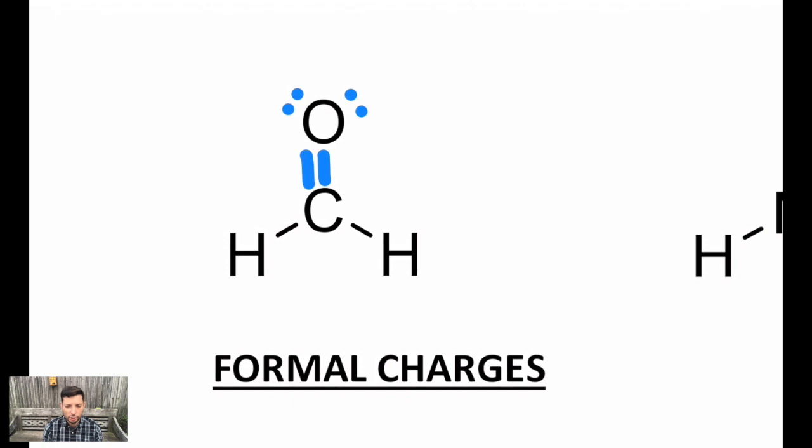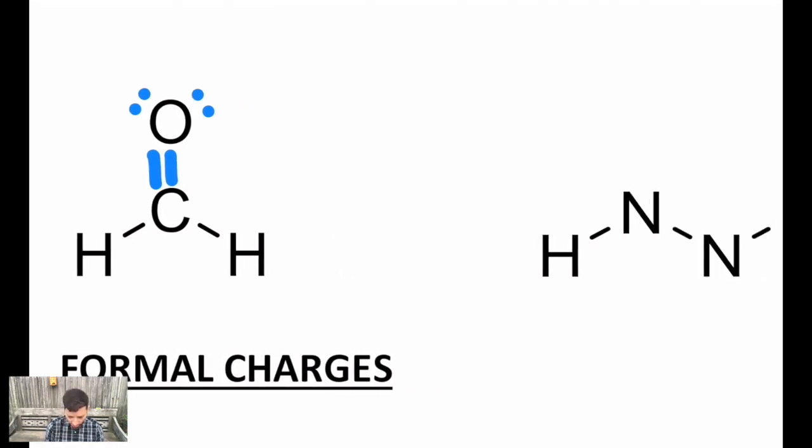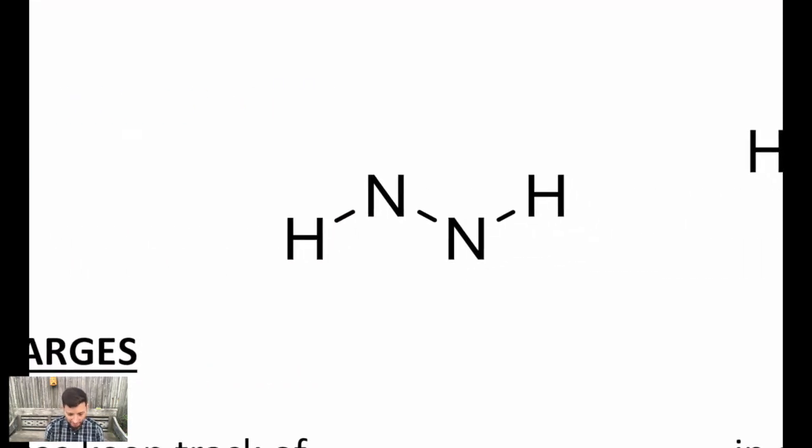When you first learned how to draw structures, you counted the total valence electrons for a structure. Carbon brings four, oxygen brings six, and each hydrogen brings one. So that's 12 electrons and that's exactly what we have. But in organic chemistry, we're only dealing with a handful of elements to kind of get used to just what the bonding pattern looks like. So I'm going to avoid going into counting valence electrons for this exercise. It's still a valid way of figuring out a structure, but we're going to take it a little more accelerated in this lesson.